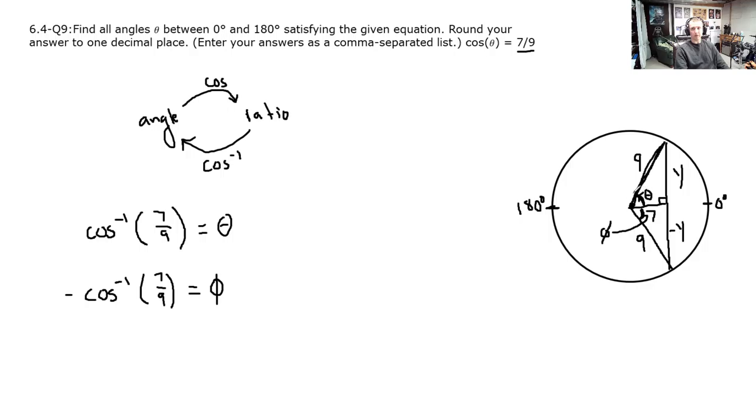If I go around the circle an entire another time, I can get to another angle that has the same cosine ratio. But what's true about that, and what's true also about this triangle down here, is that those angles are not between 0 and 180. So what angles are they that give you cosine of 7 ninths? It's only this one.